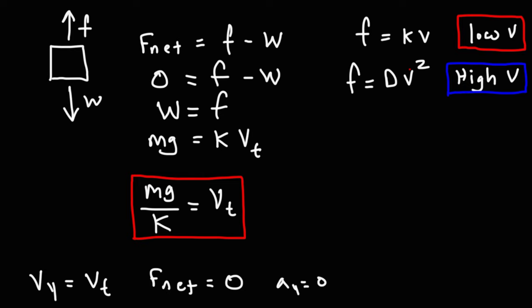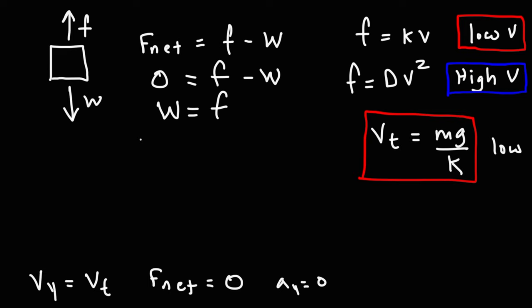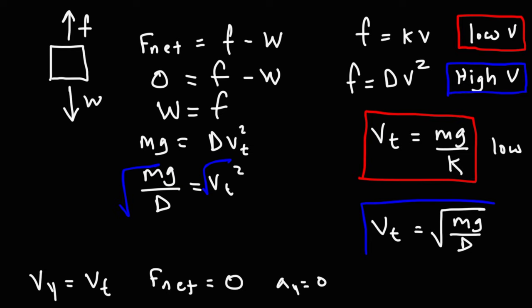That's how you calculate terminal velocity for low-speed situations. At high speeds, we replace f with Dv² and solve for v. Both D and k are proportionality constants. Dividing both sides by D and taking the square root gives terminal velocity equal to the square root of the weight force divided by the proportionality constant D.